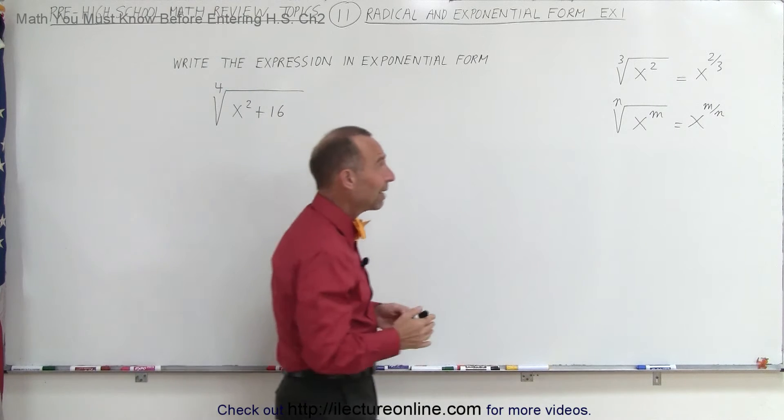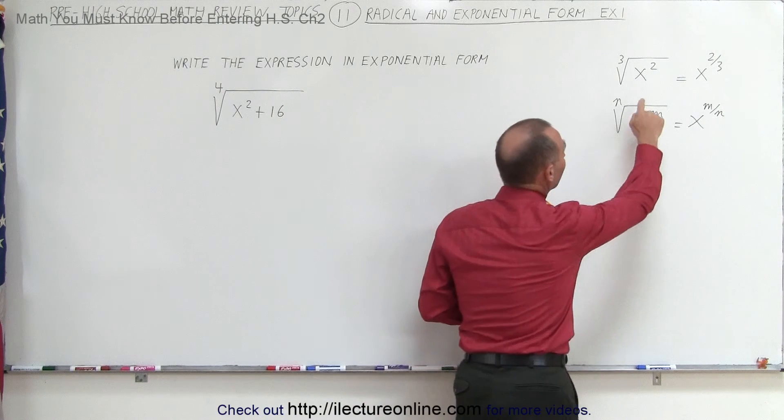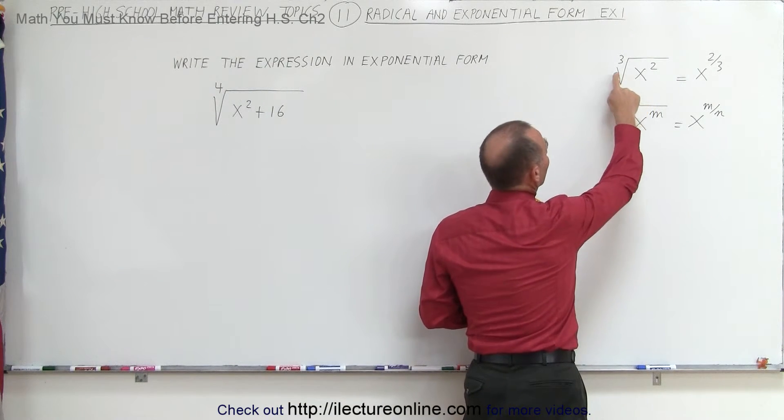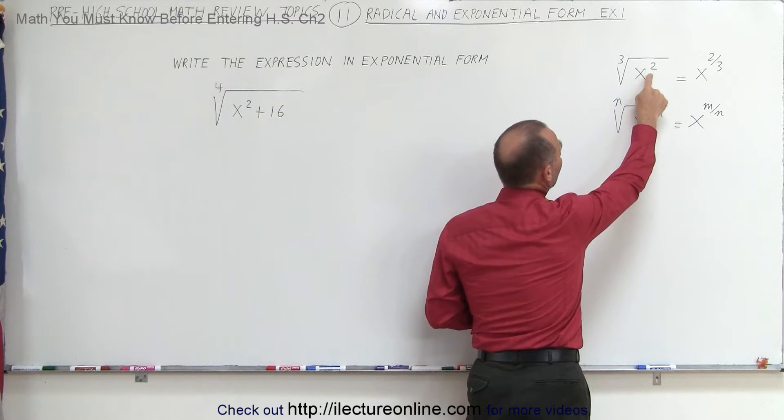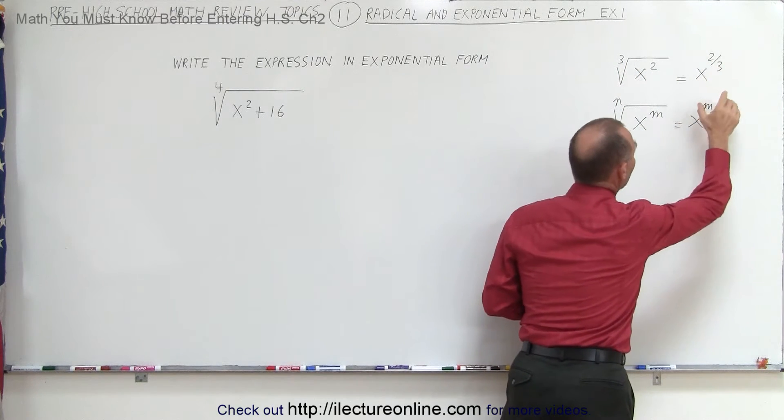In simple terms, if we have the variable x, we can write it like this. We can say the cube root of x squared, which can also be written as x to the two-thirds power.